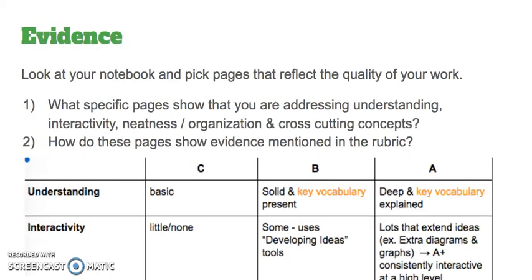For the evidence section, look at your notebook and pick pages that reflect the general quality of your work. Sometimes you have a really great page, but if it doesn't represent your overall work, you won't get an A just because one page is awesome. Pick specific pages that show you are addressing understanding, interactivity, neatness, organization, and cross-cutting concepts. Within those four pages, show that you're covering all parts of the rubric, not just color.